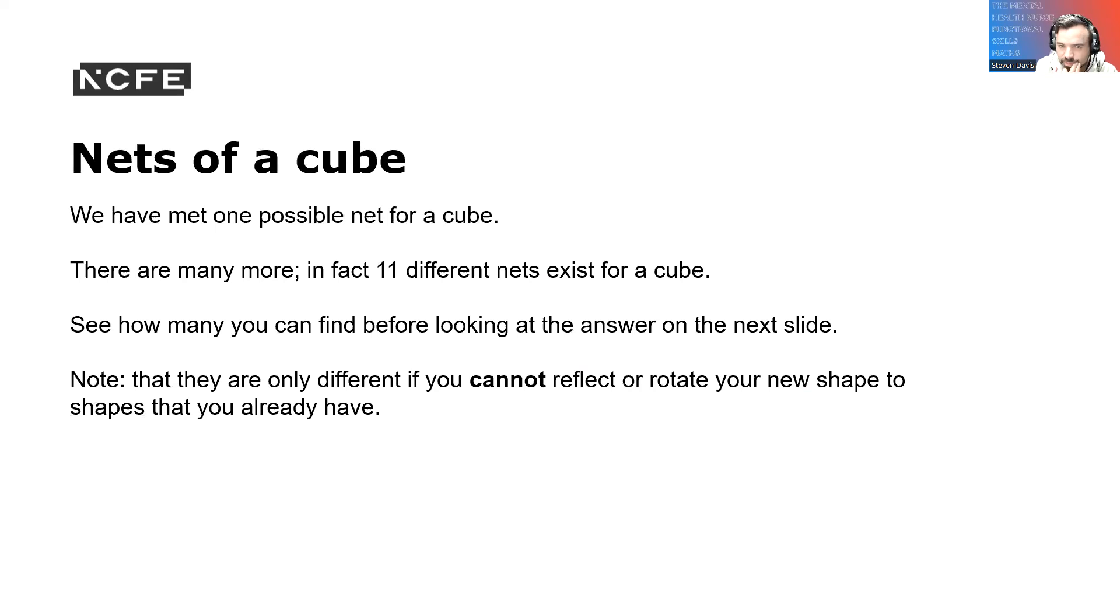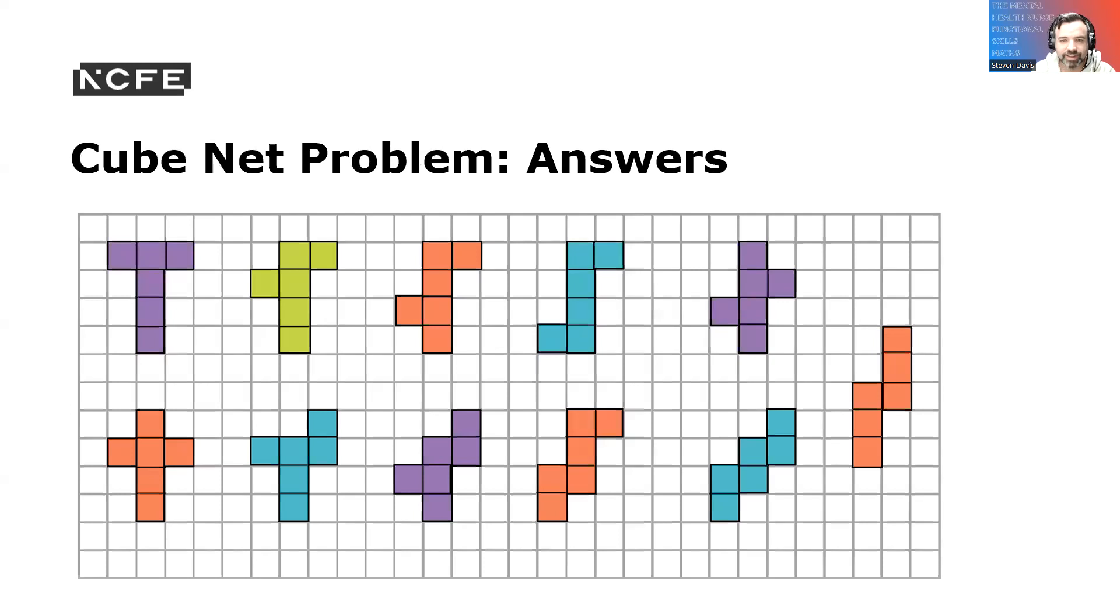So nets for a cube. You have met one possible net for a cube. There are many more. In fact, 11 different nets exist for a cube. So how many can you find before looking at the answer on the next slide? I'm going to show you just to put you out of your misery. There we go. So there's the possible answers there. All different ways of making a cube.